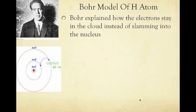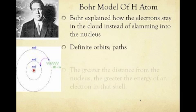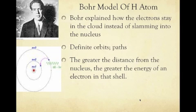Bohr created and explained how electrons stayed in the cloud instead of slamming into the nucleus. He defined those orbits and said that each electron has a specific orbit, has a specific path. He said that the greater the distance from the nucleus, the greater the energy of an electron in that shell. In this picture, we have the nucleus and then we have those energy levels or those orbits going around it.